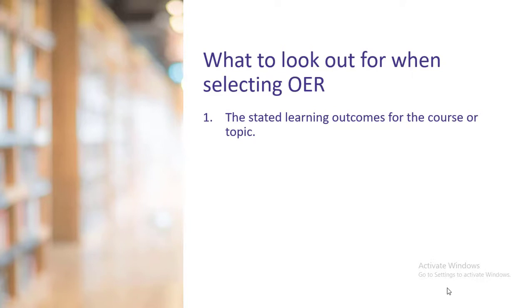We must not forget that in online learning it is easier to detect plagiarized documents, therefore we must be careful in our selection. The first point on what we must consider when selecting OER materials for online learning is the stated learning outcome for the course or topic. Read the OER materials to see if it meets the stated learning outcomes. Identify the skills required to meet the learning outcomes and study the OER content to identify such skills. The suitability of the OER materials should range between 90 to 100 percent.